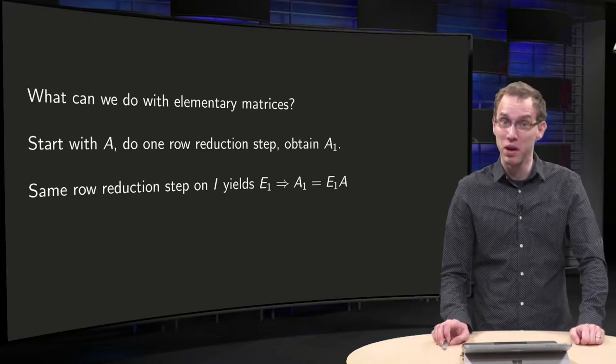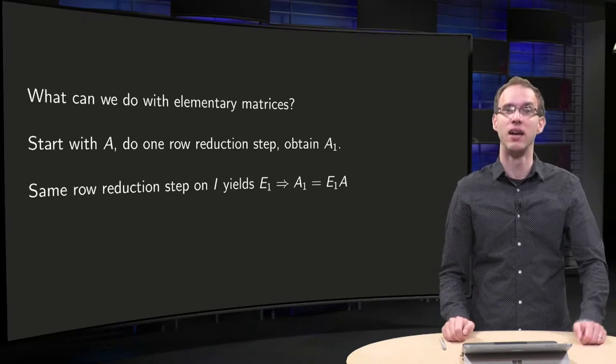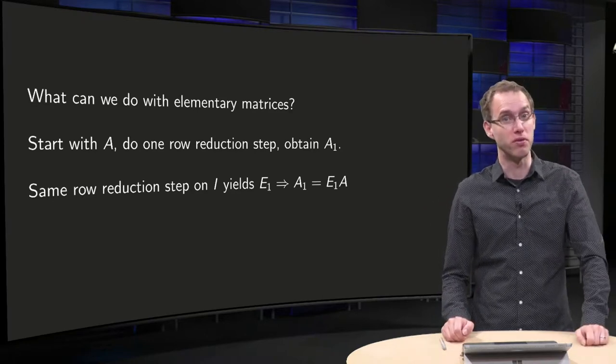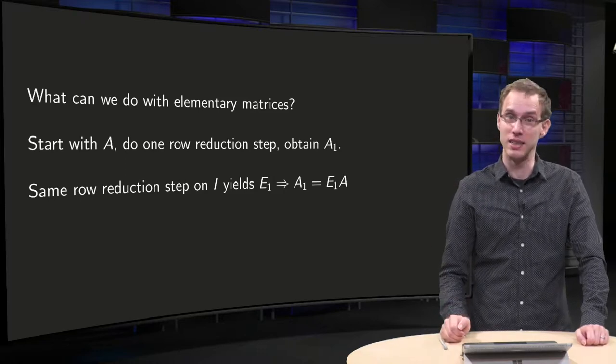Multiplying a matrix A with one elementary matrix performs one row operation on A. And of course we can do this a couple of times, so we can perform a sequence of row operations on A like this.